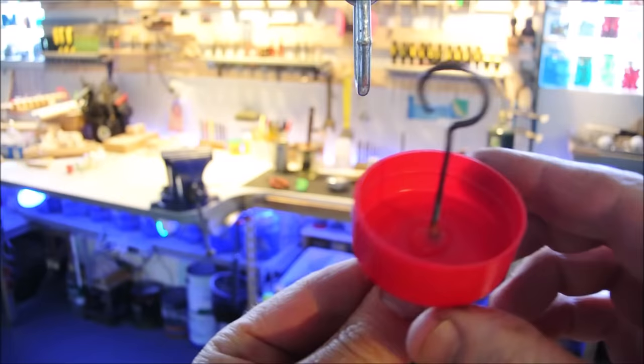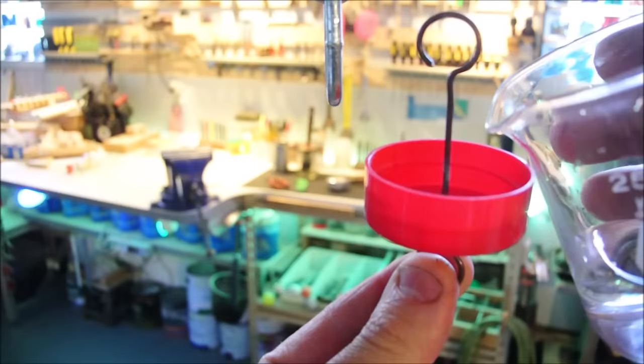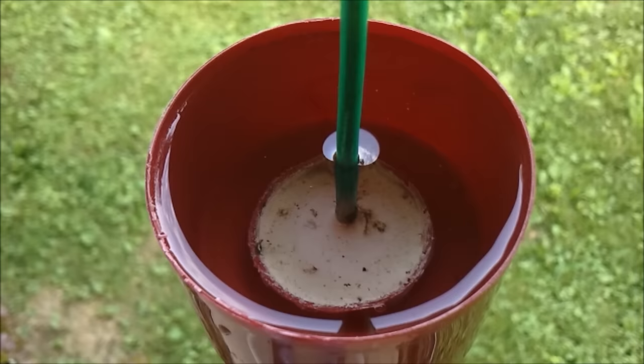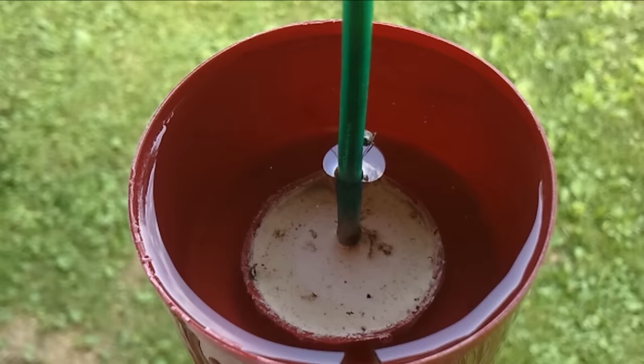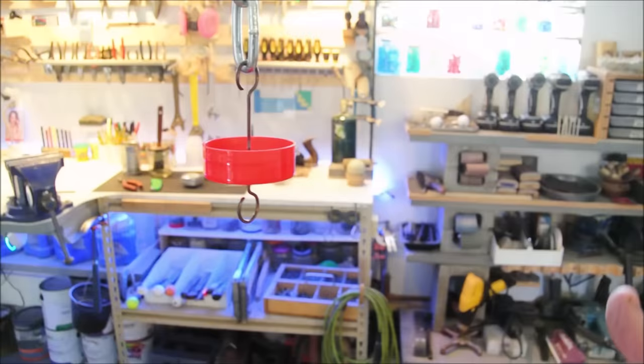If ants become a problem at your feeder, you'll want to do something like this. This is just the lid to a spice container, and it's a piece of wire that moves through it, and there's a little glob of hot glue there. That's all it takes to make a little container of water. And believe it or not, ants will not cross this.